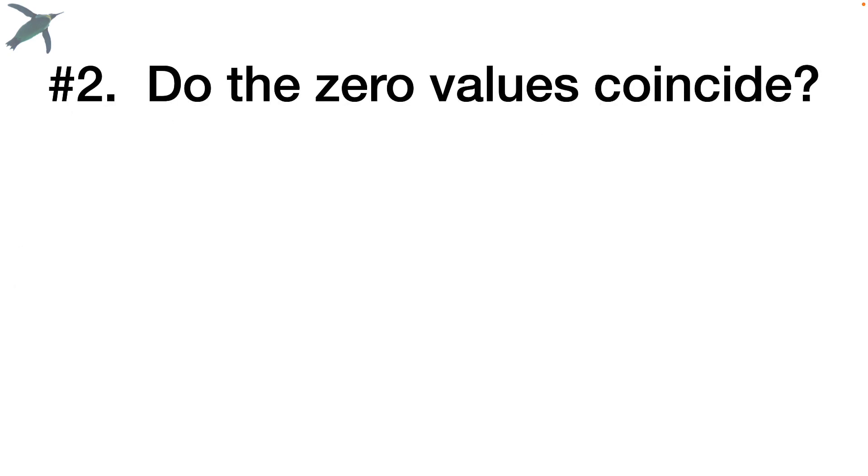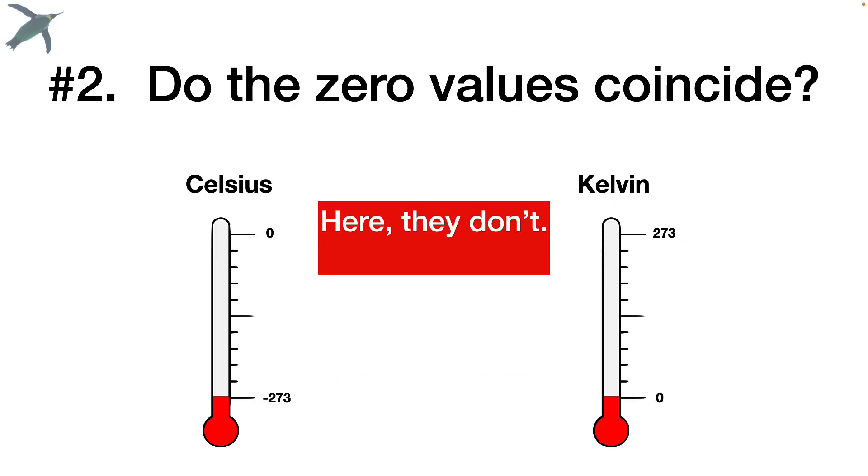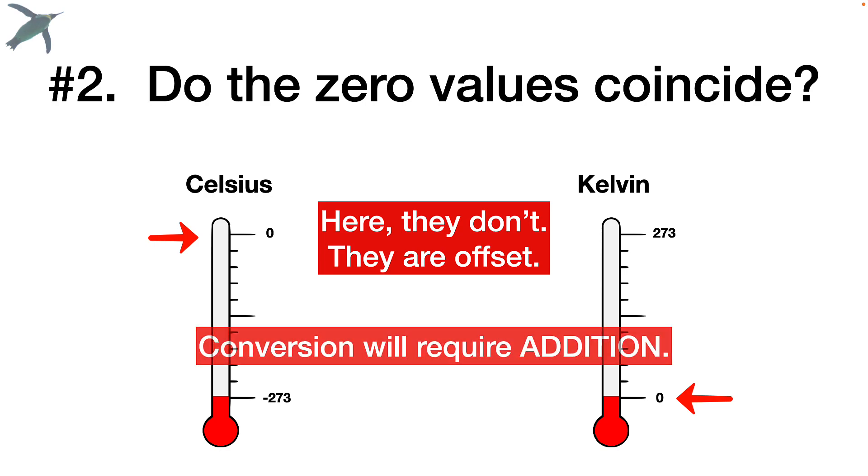The second question is, do the zero values coincide? And here on the length scale between centimeters and inches, they do. But between the Celsius and Kelvin temperature scales, they don't. They are offset, meaning zero Celsius does not line up with zero Kelvin. This means that the conversion between the two will require addition.